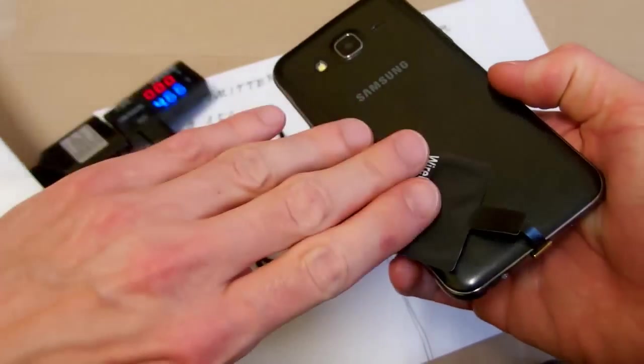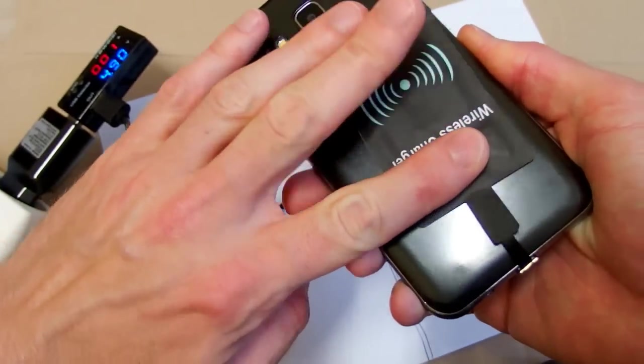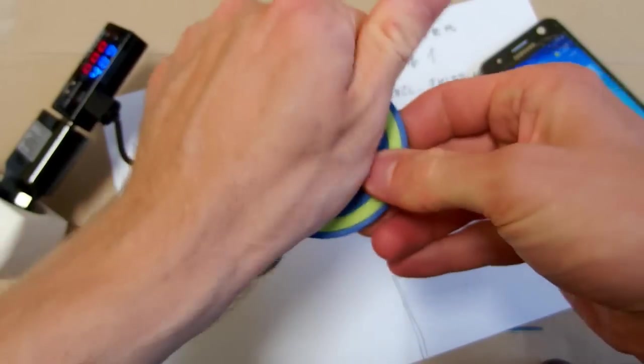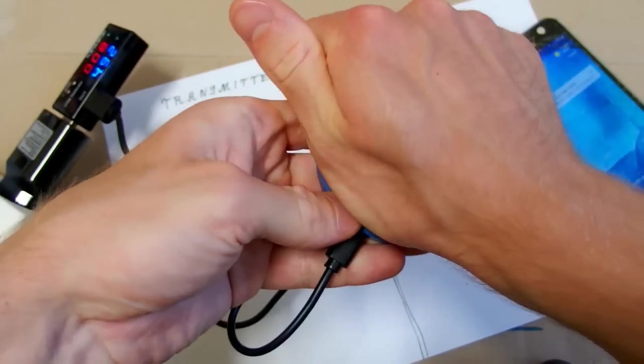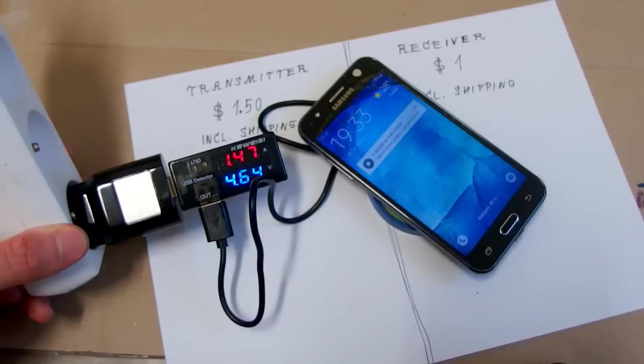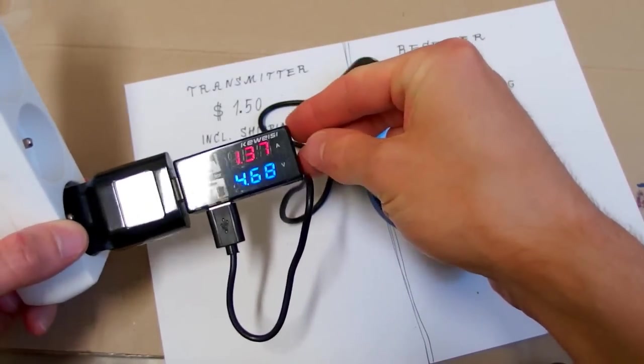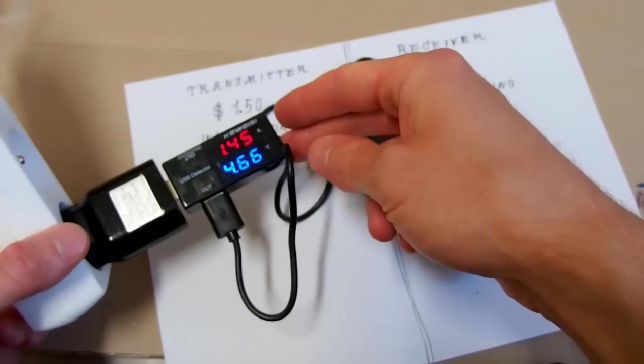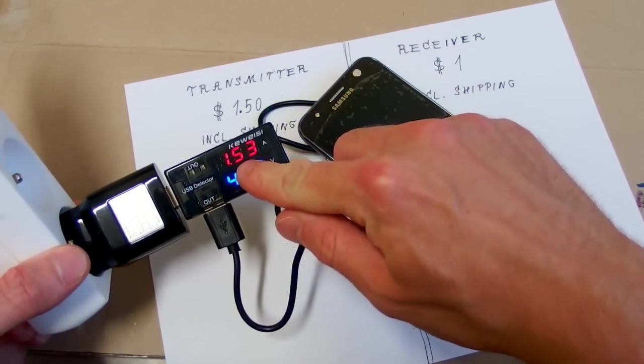And the receiver is, well, getting quite hot. And the transmitter is also a little bit hot. Now it's 1.5 amps. It seems to be cooking my phone like an induction heater or induction cooker because now it's 1.5.